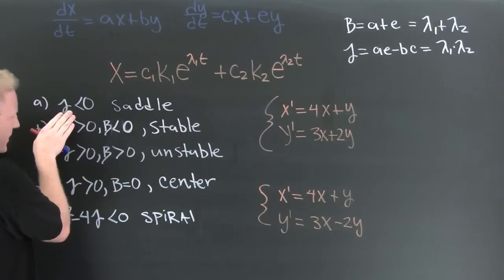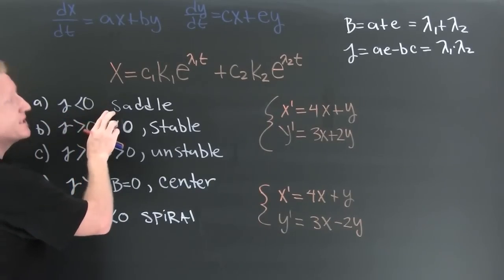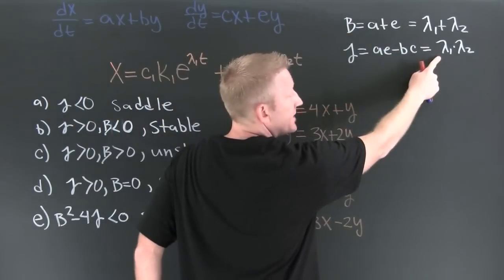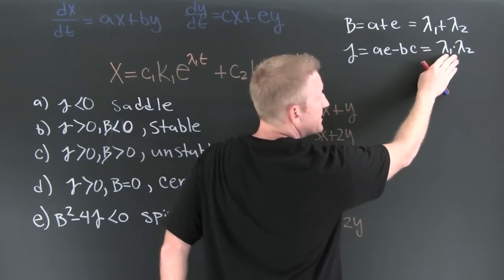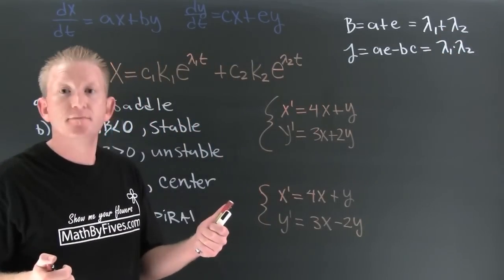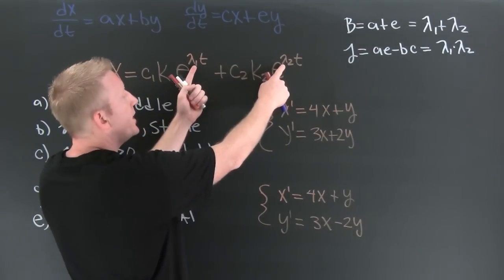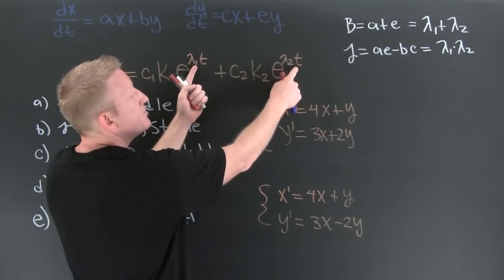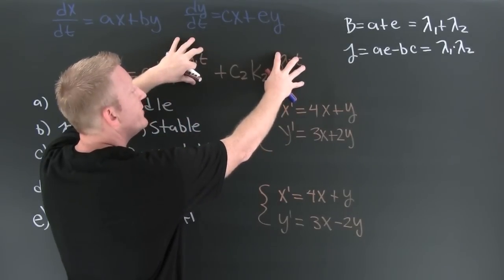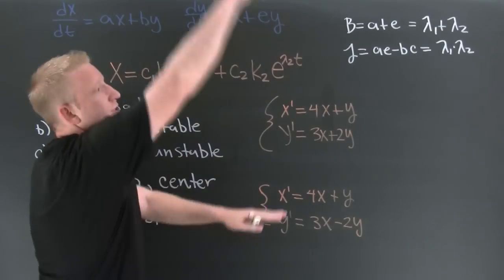If gamma is smaller than zero, it's a saddle point, and here's why. If gamma is smaller than zero, then that product of eigenvalues is negative, meaning they have opposite signs. That means the exponents in the general solution have opposite signs, so as t gets big, one term goes to zero and the other goes to infinity — or vice versa. That's why you're getting some different action at the origin.